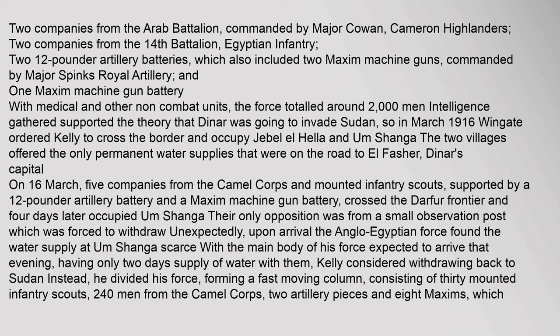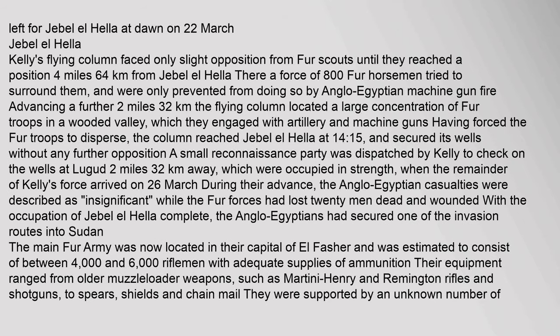Intelligence gathered supported the theory that Dinar was going to invade Sudan, so in March 1916 Wingate ordered Kelly to cross the border and occupy Jebel El Hela and Umm Shanga. The two villages offered the only permanent water supplies on the road to El Fasher, Dinar's capital. On 16 March, five companies from the Camel Corps and mounted infantry scouts, supported by a 12-pounder artillery battery and a Maxim machine gun battery, crossed the Darfur frontier and four days later occupied Umm Shanga. Their only opposition was from a small observation post which was forced to withdraw. Upon arrival the Anglo-Egyptian force found the water supply at Umm Shanga scarce. Having only two days' supply of water with them, Kelly considered withdrawing back to Sudan. Instead, he divided his force, forming a fast-moving column consisting of 30 mounted infantry scouts, 240 men from the Camel Corps, two artillery pieces and eight Maxims, which left for Jebel El Hela at dawn on 22 March.